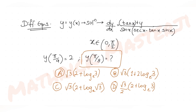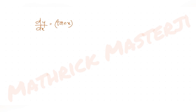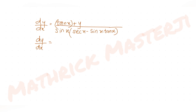So I have dy/dx = (tan x + y) / (sin x · sec x − sin x · tan x). I can rewrite tan x as sin x / cos x, so the numerator becomes sin x / cos x + y. I'll write it as (sin x + y cos x) / cos x.